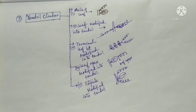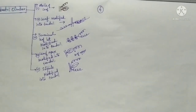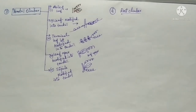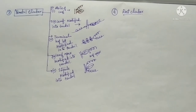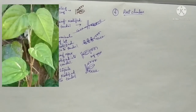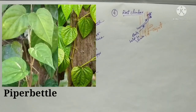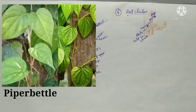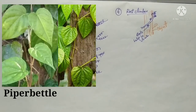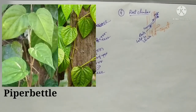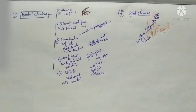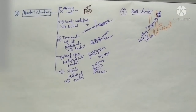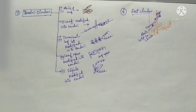The next type of weak stem climber is root climber. Here, roots help the plant to climb. The plant attaches to any object or other plants through its roots, and these roots help the plant to climb up. This type is known as root climber.